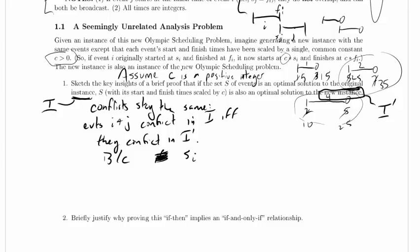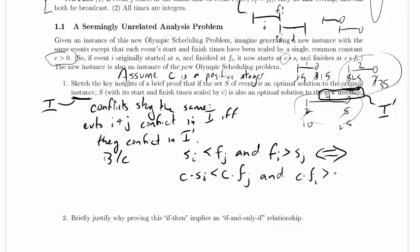Actually, what I'm going to say is, I'm just going to set up this relationship. So, the start time of i is less than the finish time of j. So we actually want less than the finish time of j, and the finish time of i is greater than the start time of j. If and only if c times si is less than c times fj, and c times fi is greater than c times sj, and I'm just going to say because c is greater than 0. There's nothing super exciting going on here, we just multiplied each side of an inequality by a positive constant, and that's not going to change the inequalities.